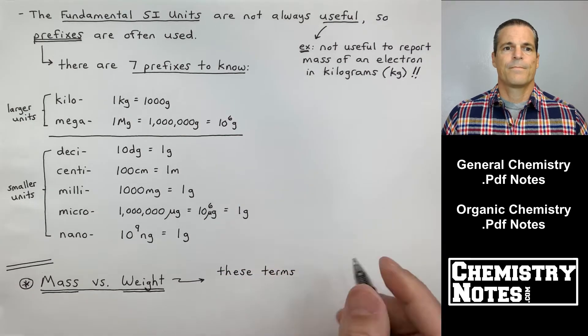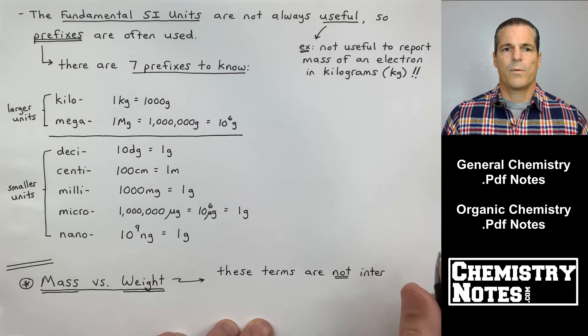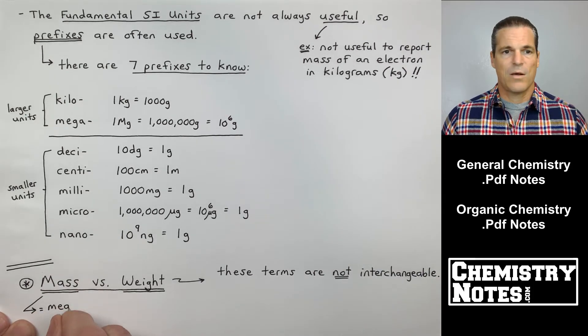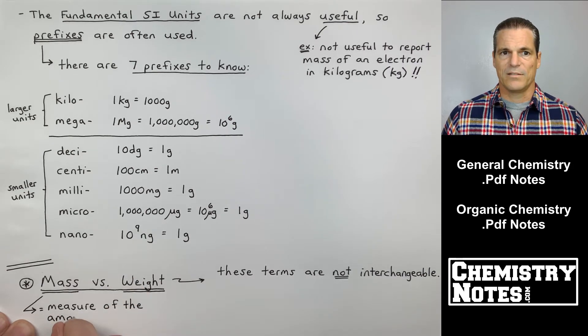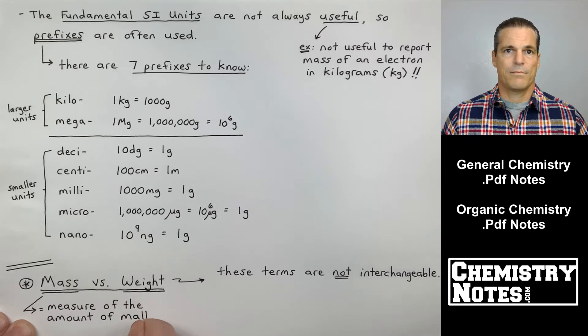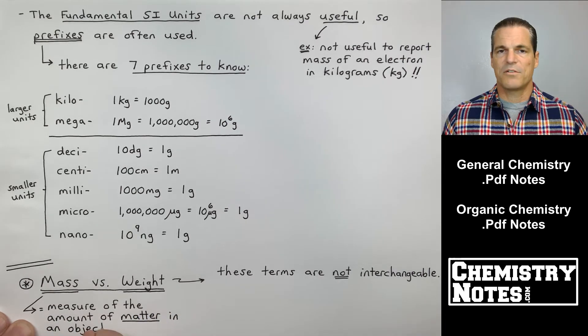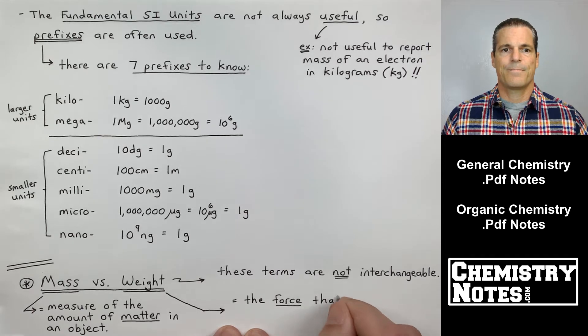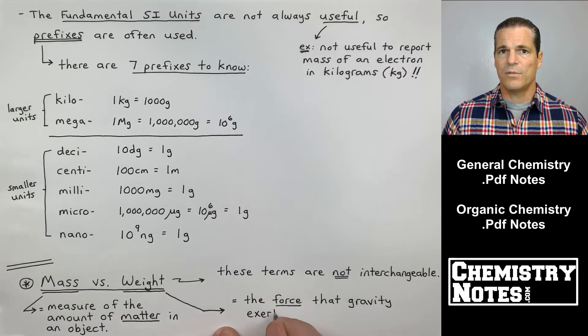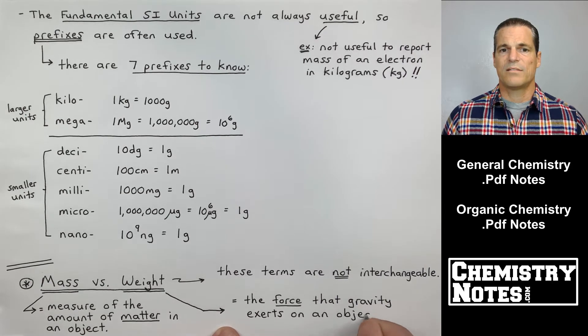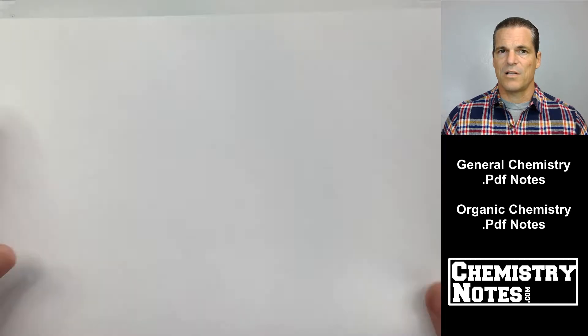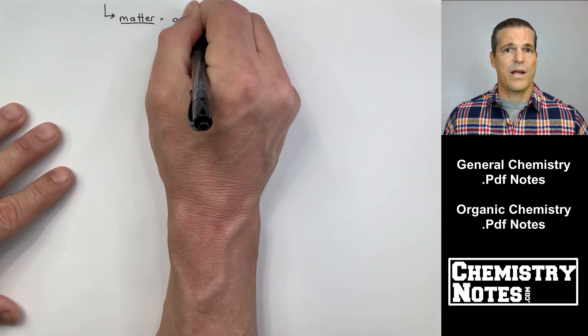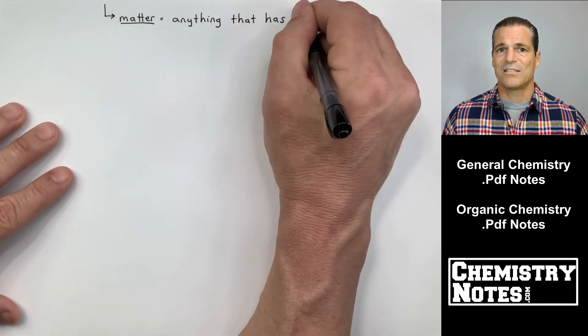Mass versus weight. Now, I wanted to throw this in. This is just a real quick entry before we return to types of units and measurements. Mass versus weight. These terms are not interchangeable. Now, we use these every day and we interchange them all the time with our friends. How much does he weigh? How much does this? What's the mass of this? We kind of interchange them all the time, but mass is the measure of the amount of matter in an object that never changes. Weight changes.